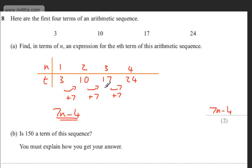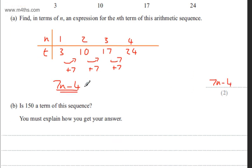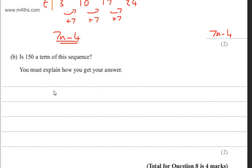As stated, the table certainly isn't required, but it might help out. In part B for two marks, it says is one hundred and fifty a term of this sequence? You must explain how you got your answer.